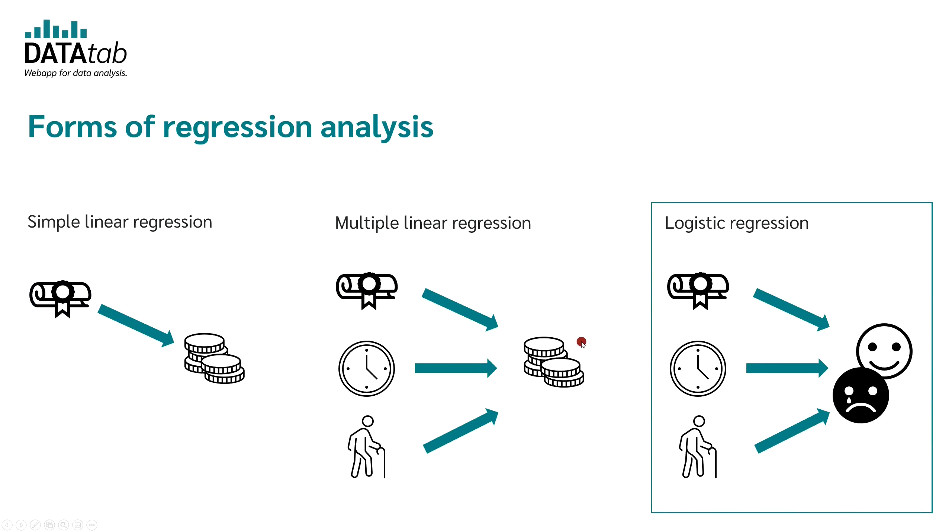In the previous videos we talked about linear regression. In a linear regression the dependent variable is metric, for example salary or body height. Whenever you want to use a categorical variable as your dependent variable you must use a logistic regression.